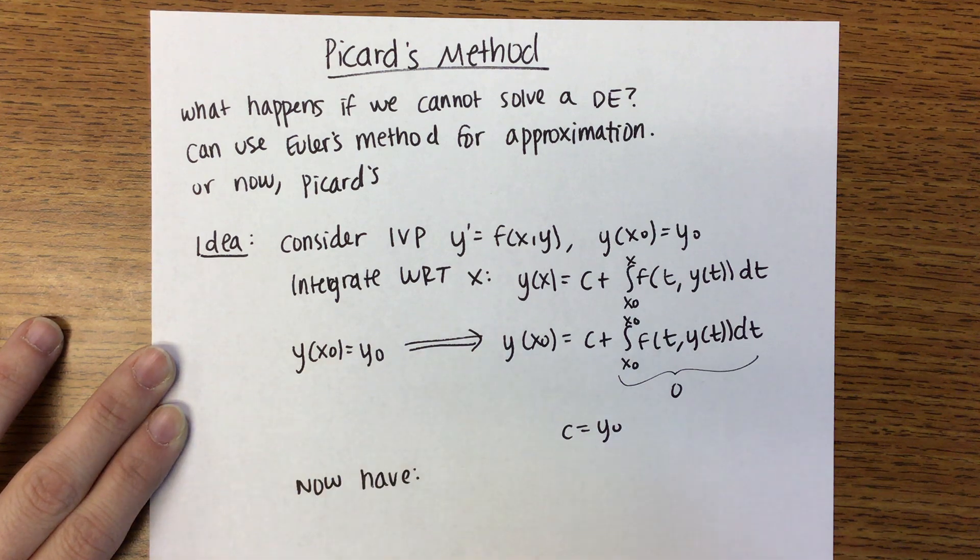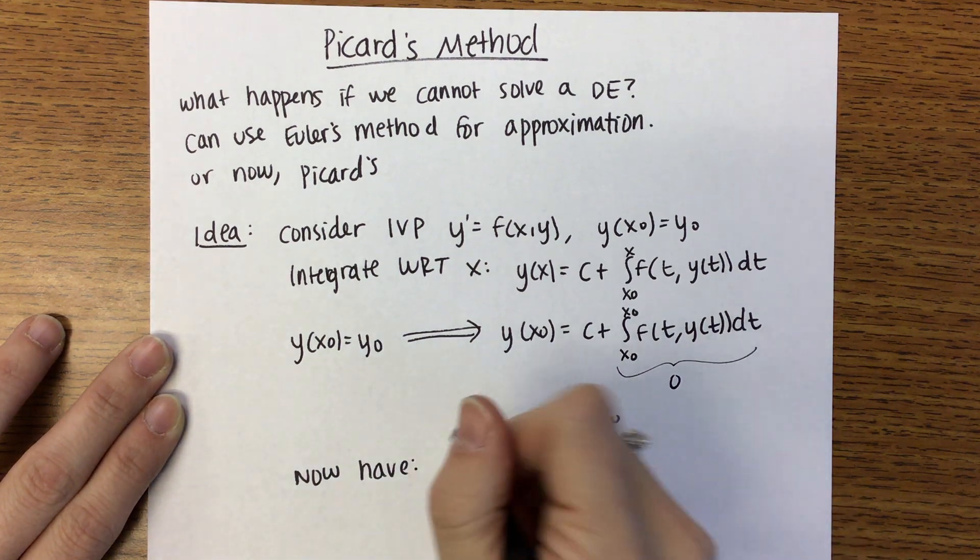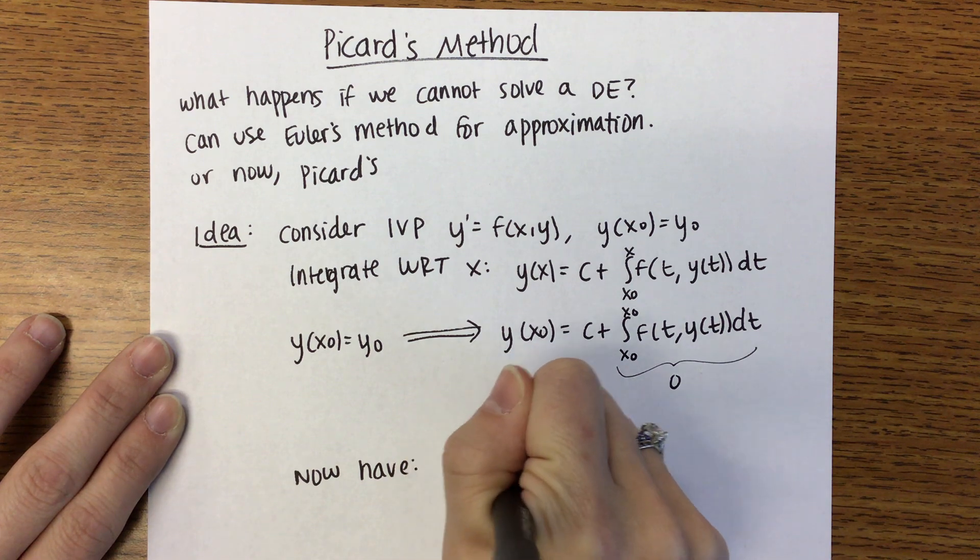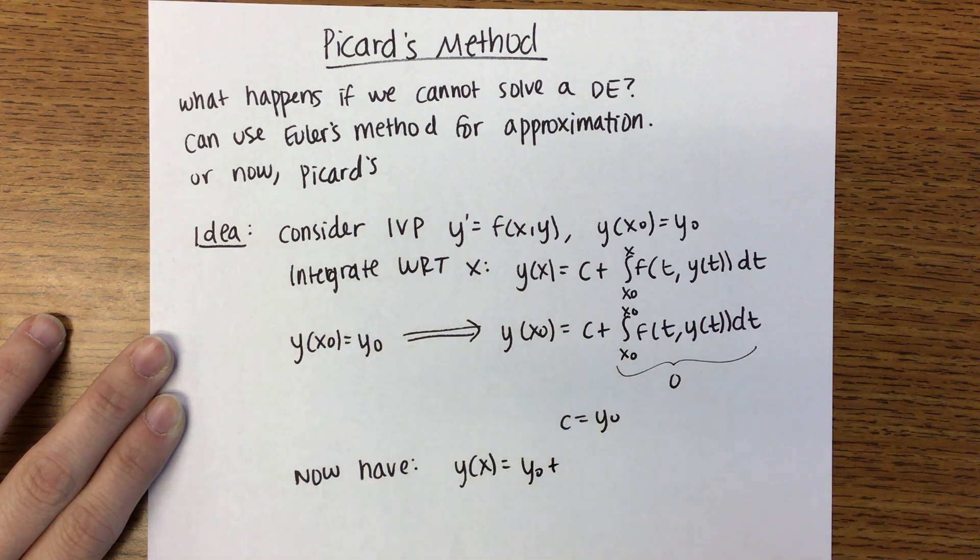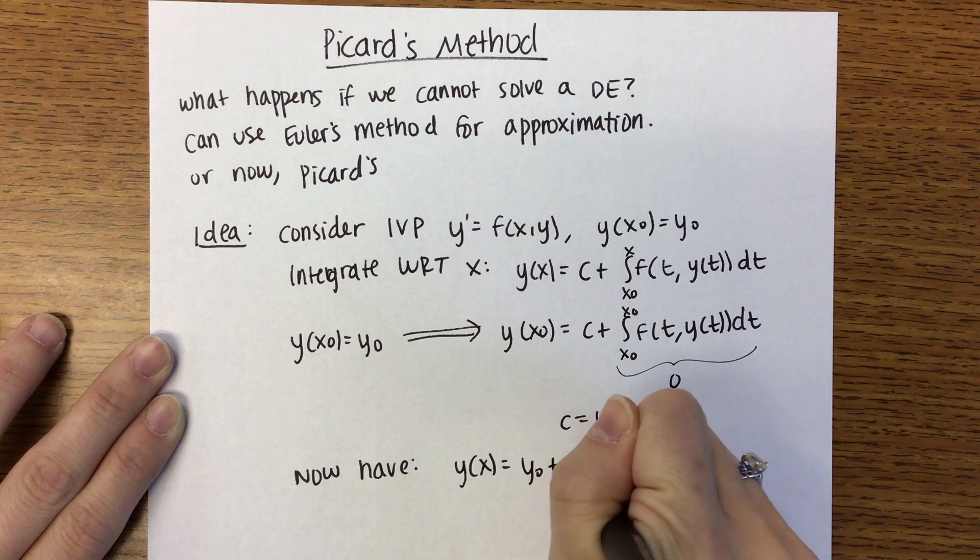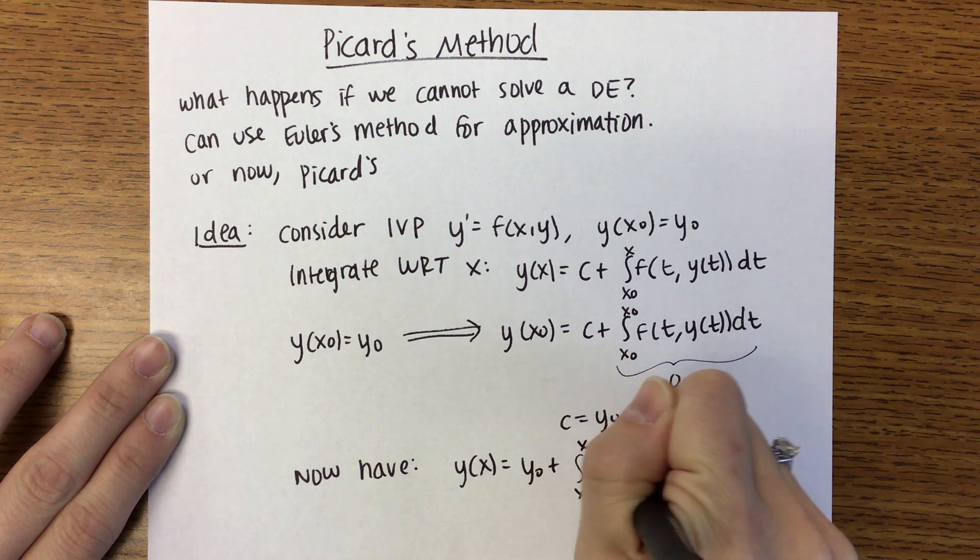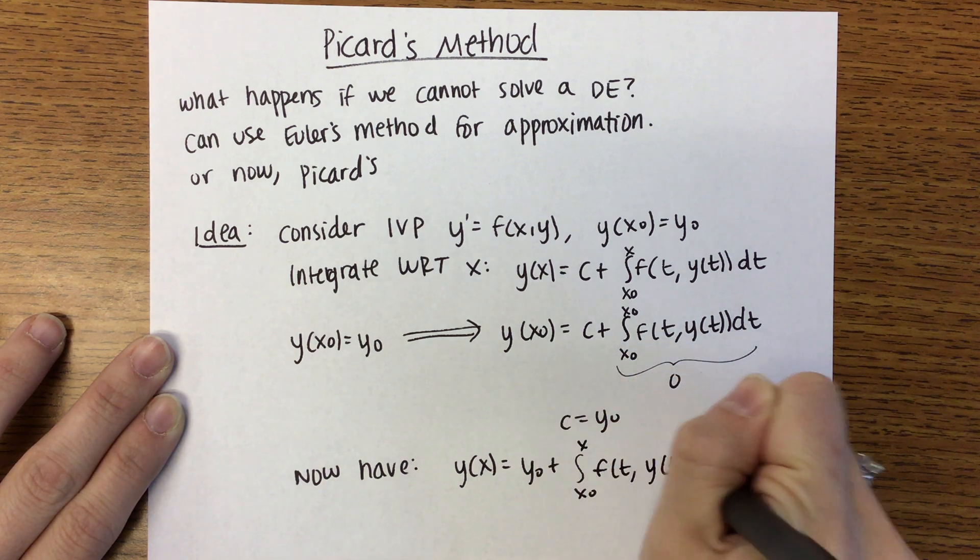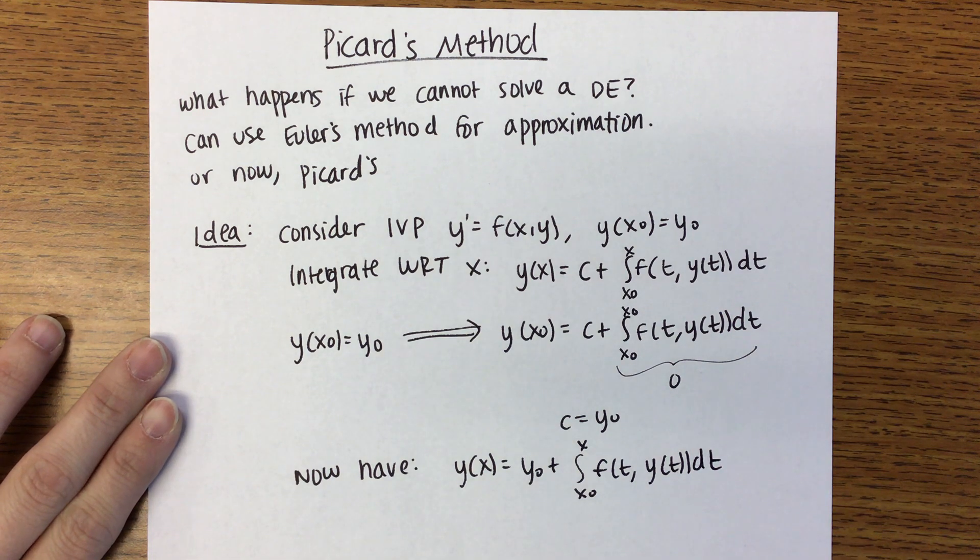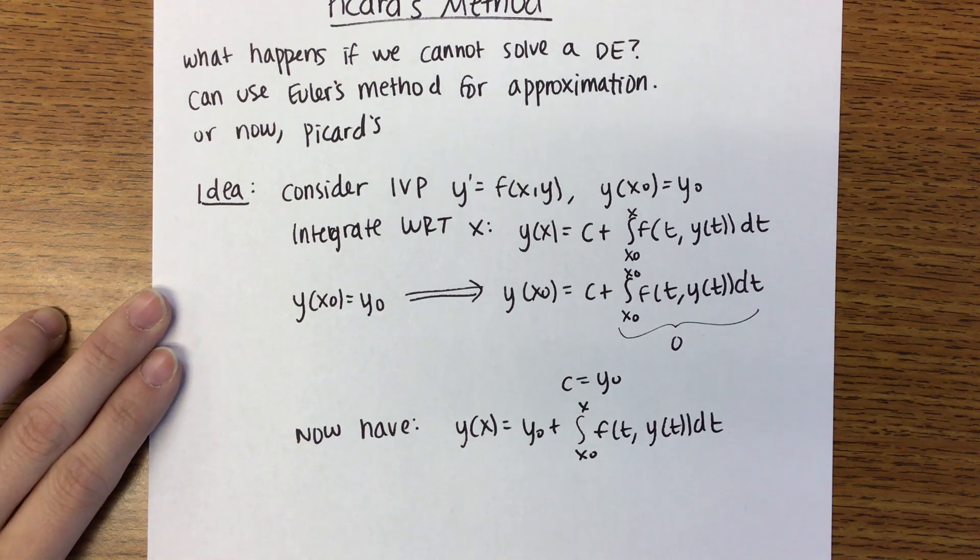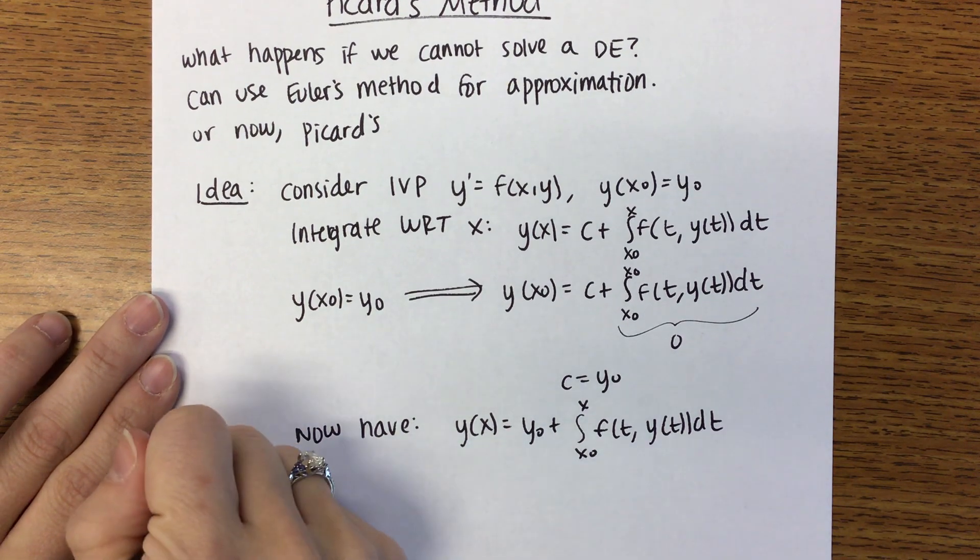So now what we have is that Y of X is equal to Y0 plus the integral from X0 to X of F of T, Y of T, DT.